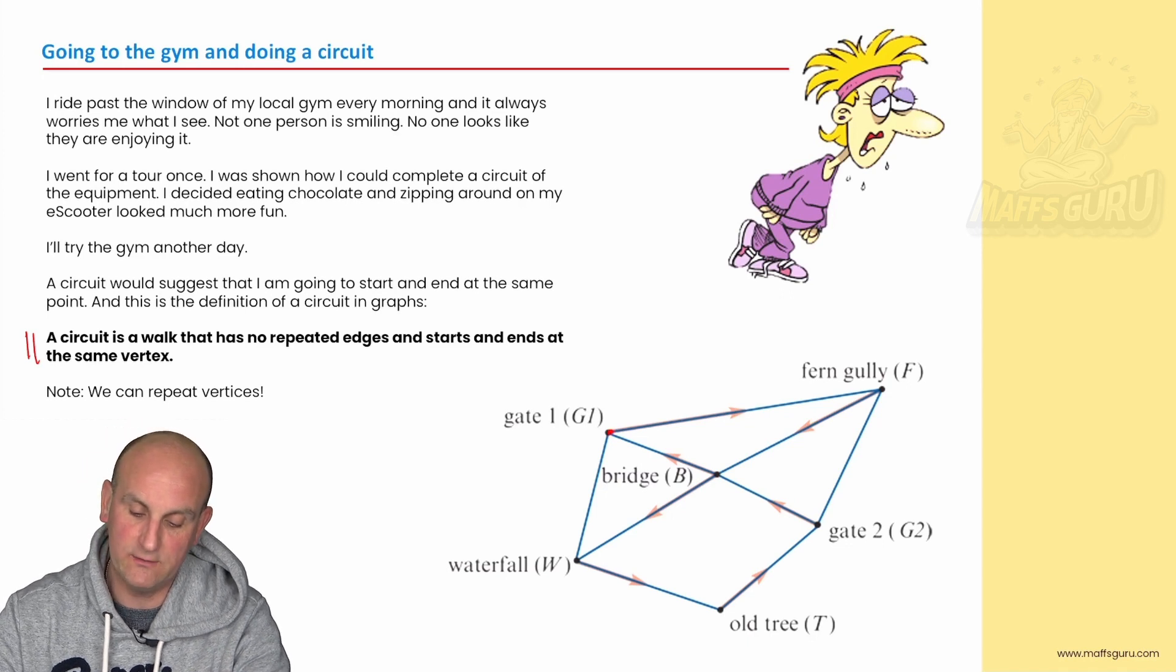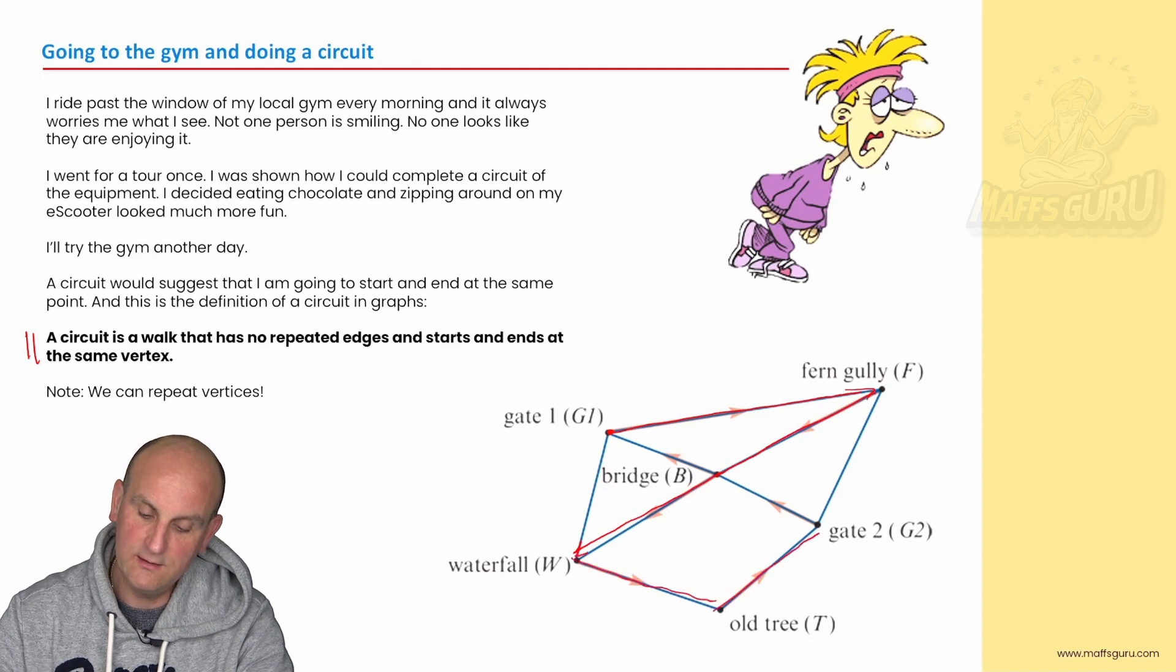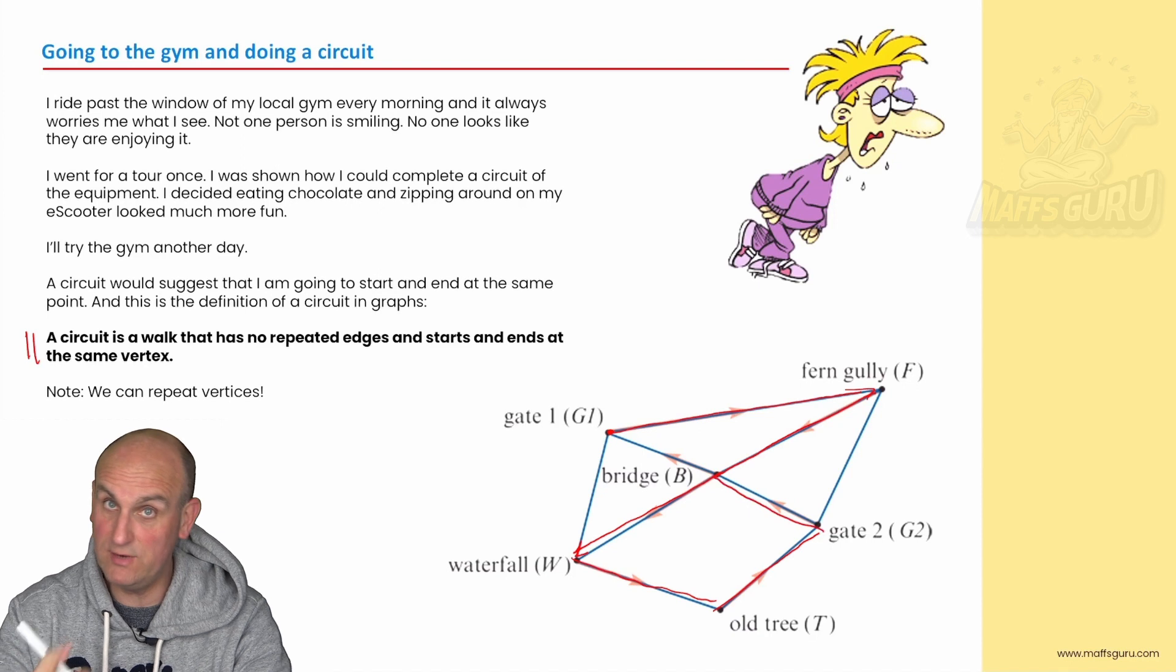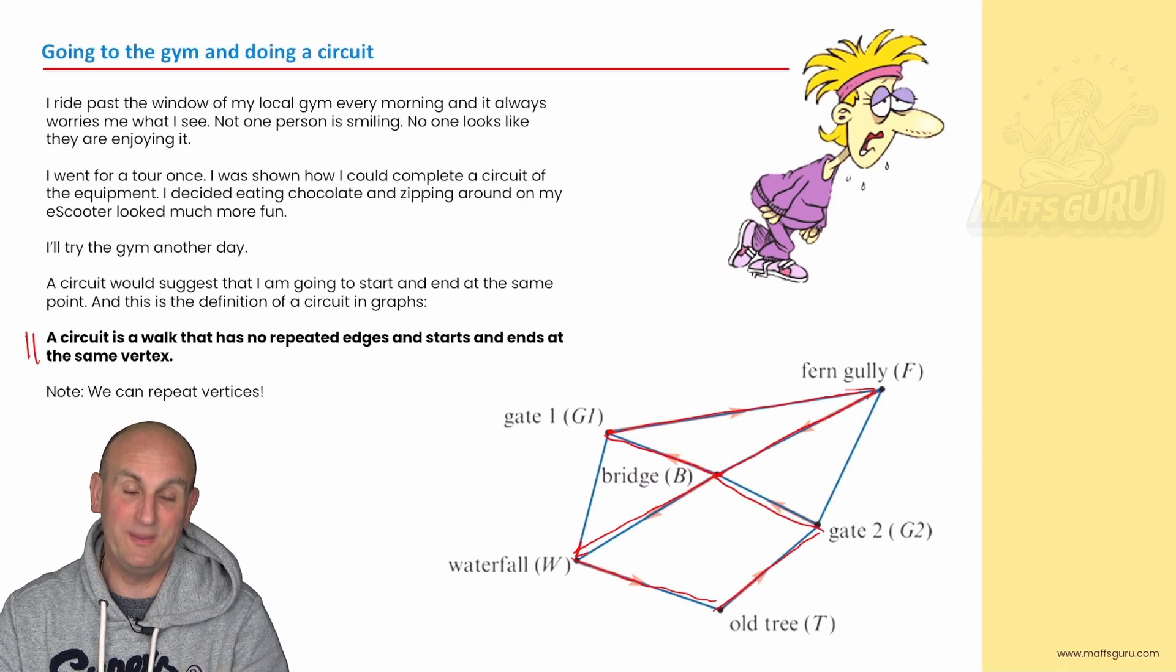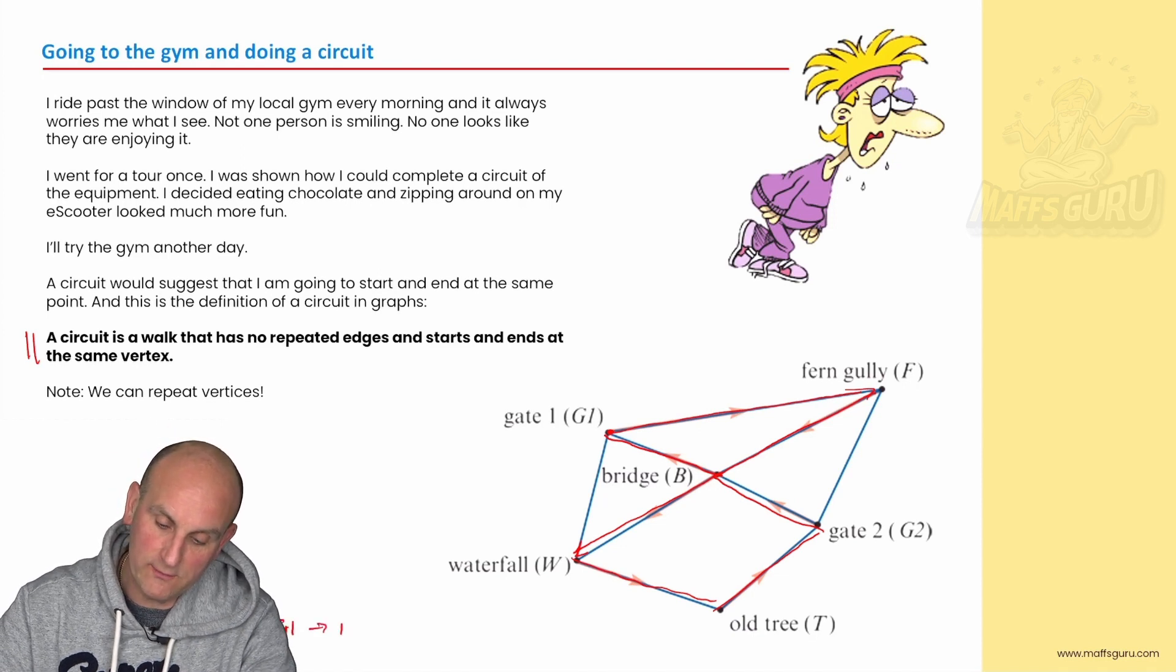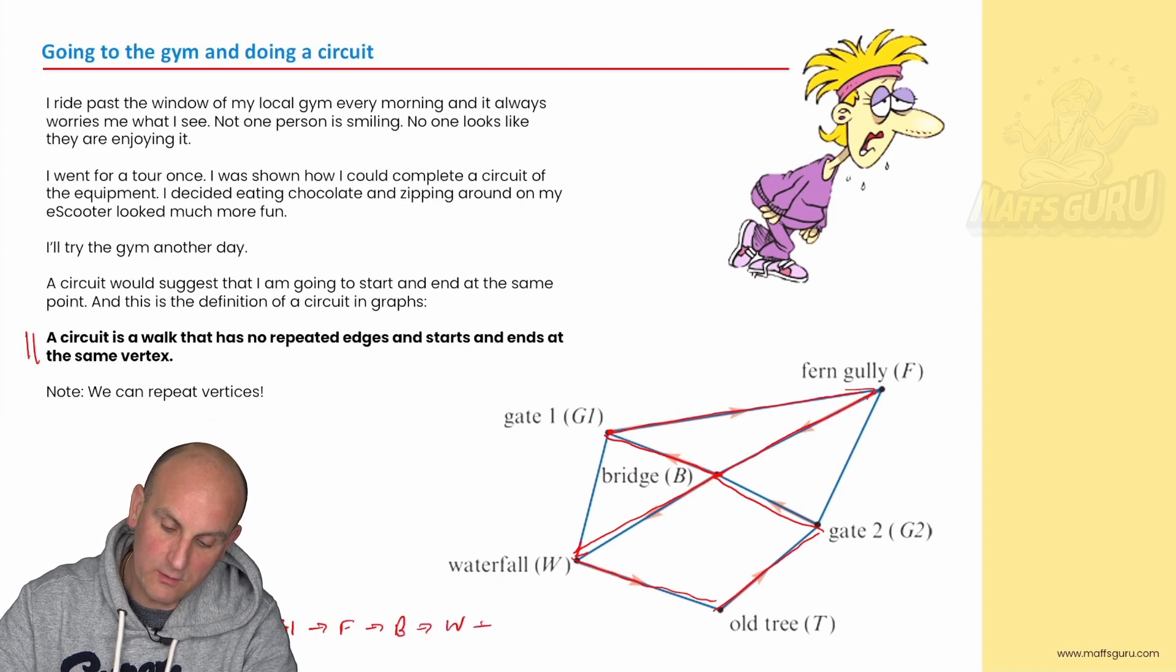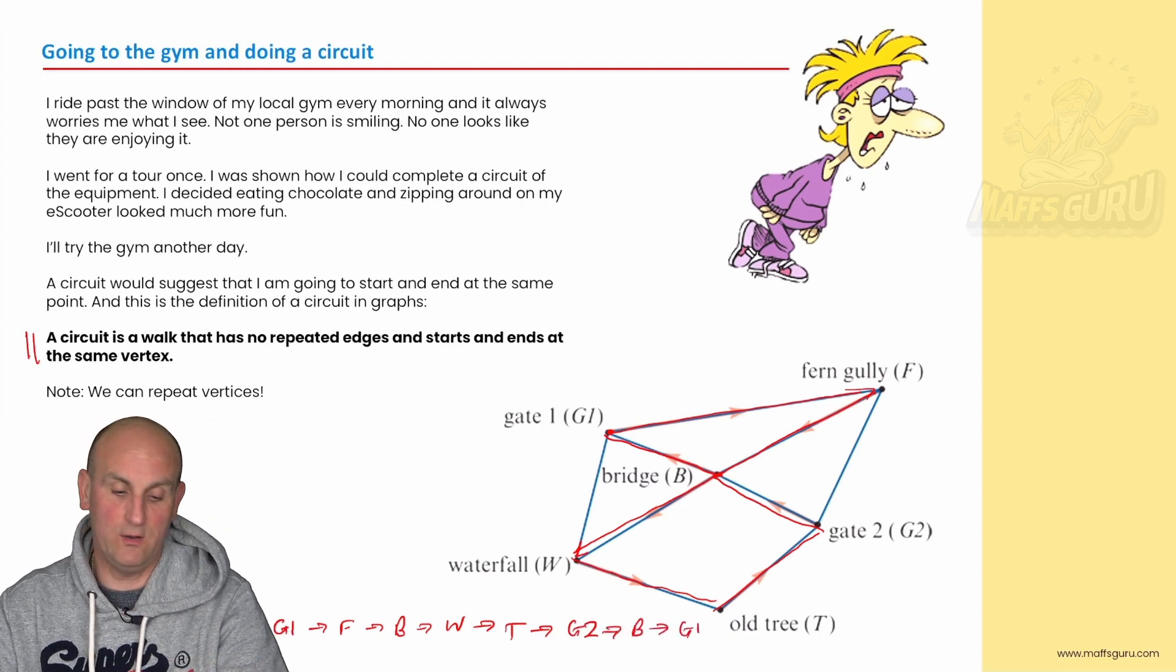Okay so let's just check here. I've got my gate. I've gone to Fern Gully. Then I've gone down to my bridge. I've gone straight the way through to the waterfall. Then the old tree. The gate. Back to the bridge. And then I'm finishing up where I started. And again notice there I am not allowed to repeat edges but I can repeat a vertex. And again if I was to write this down that would be G1 to F to B to W to T to G2 to B to G1. Now these things can tend to go on for quite a long time but there we go.